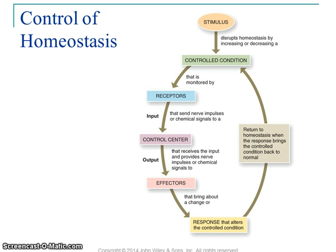So how do we control homeostasis? First, you have a stimulus. For all the variables we're monitoring — oxygen levels, blood pH, body temperature — you can have stimuli like increased or decreased body temperature. Those are monitored by receptors. The receptors, like thermoreceptors for temperature, take in this information and send it to control centers.